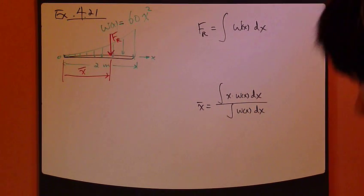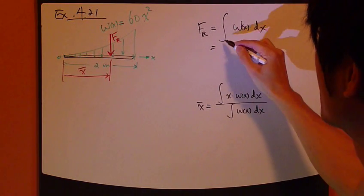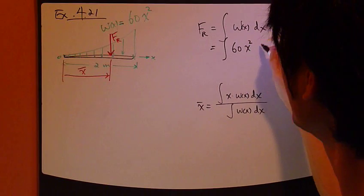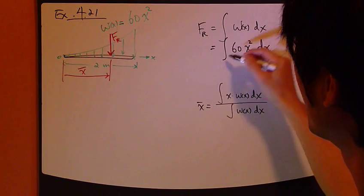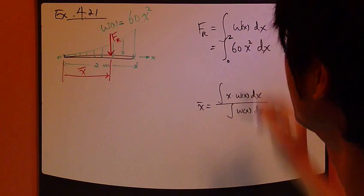Well, just plug it in. Simple as that. So let's do the math. So this is the integral of Wx, given as 60x squared dx. Integrate from 0 to 2 meters. That's it.